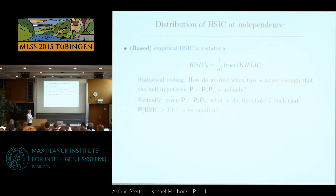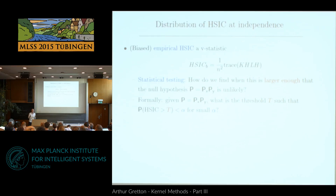This is my statistic, and I'm trying to say: what is the probability of this statistic exceeding some threshold in the case that there is dependence? Under independence, I want a very low probability of exceeding that threshold, and if I do exceed it, I reject the hypothesis of independence and conclude that my variables are likely to be dependent.